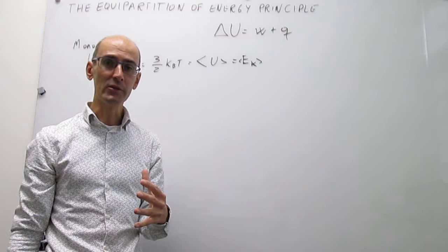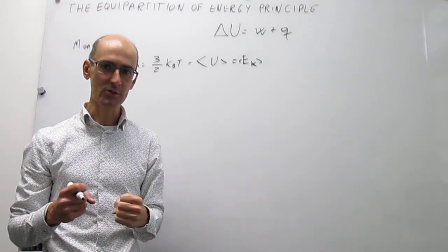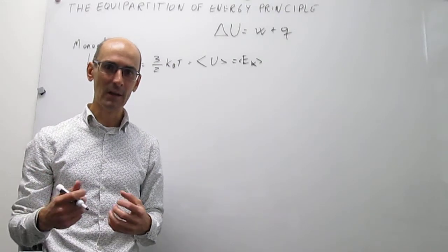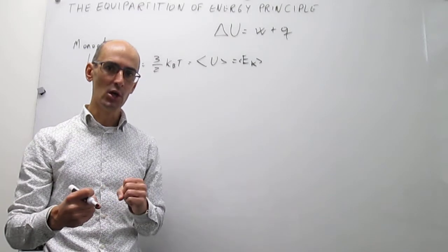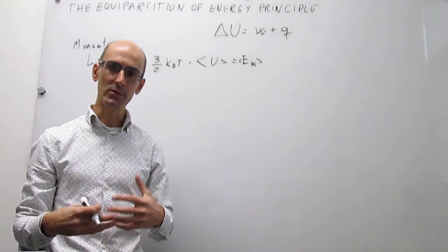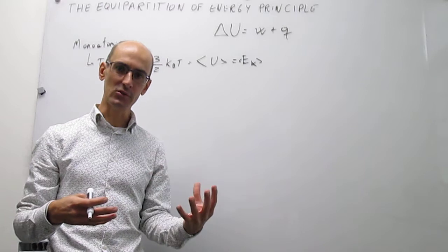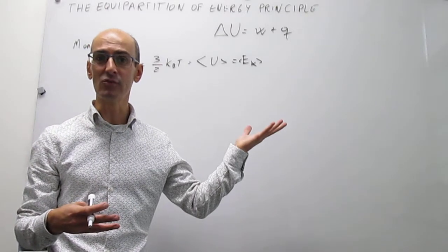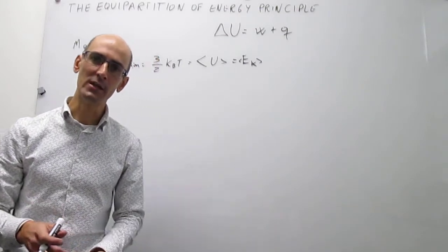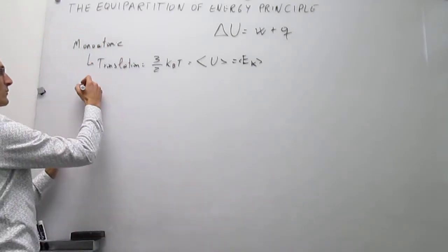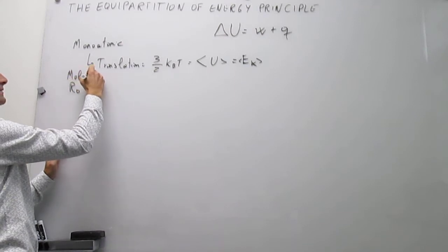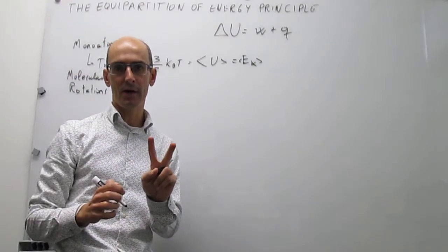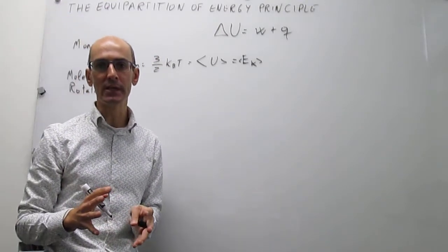Now we move beyond monatomic ideal gases to consider gases with internal structures — molecular gases. When you have a molecular gas like N₂, CO₂, or sulfur hexafluoride, you have more modes that can store energy. Those molecules can now rotate and vibrate. It turns out there are also quadratic contributions from rotation and vibration, giving a different average internal energy in addition to translation. For rotations, whether the molecule is linear or nonlinear matters because there are different ways to rotate.